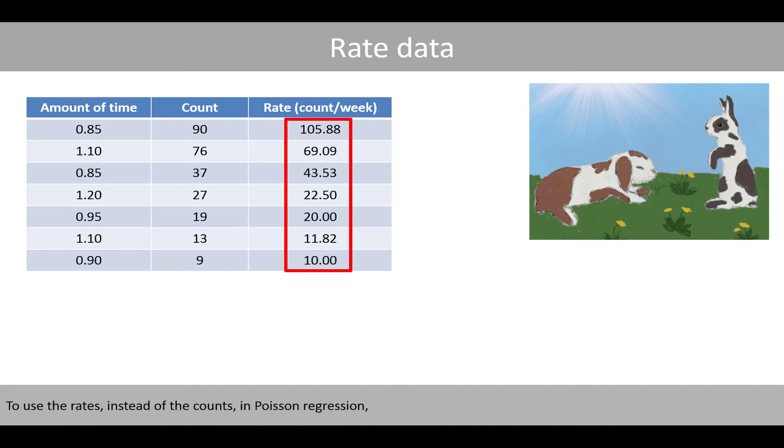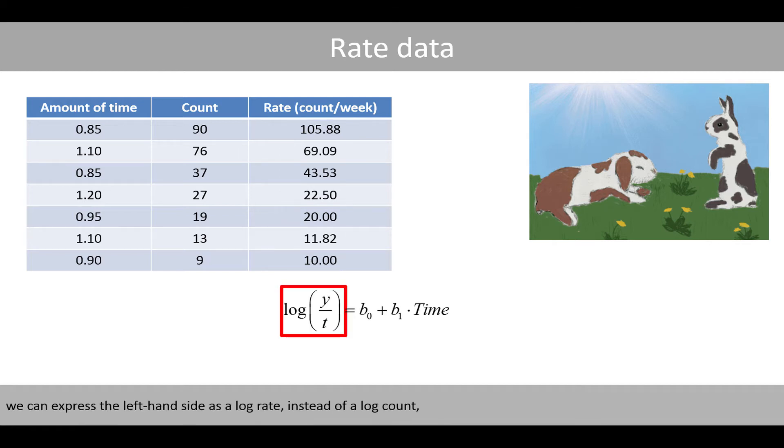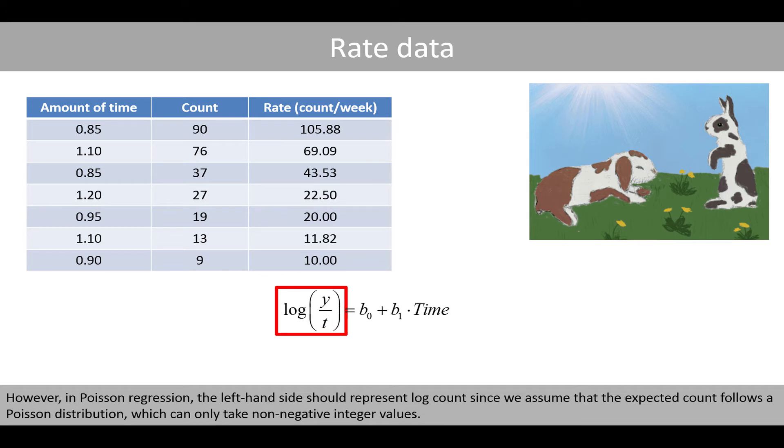To use the rates instead of the counts in Poisson regression, we can express the left-hand side as a log rate instead of a log count. Or y is the expected count within the given time intervals. However, in Poisson regression, the left-hand side should represent log count since we assume that the expected count follows a Poisson distribution, which can only take non-negative integer values.